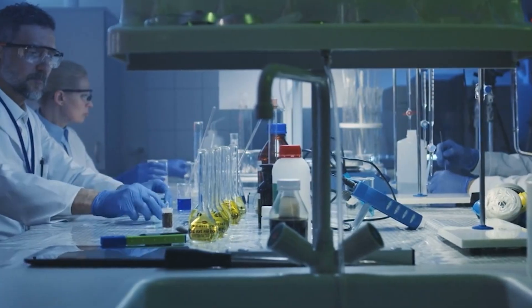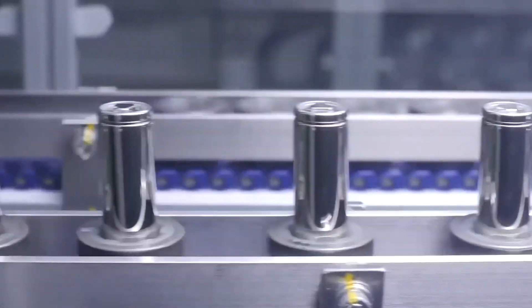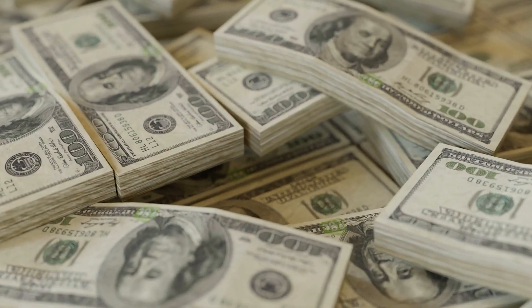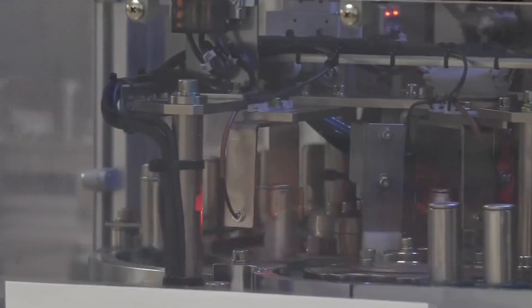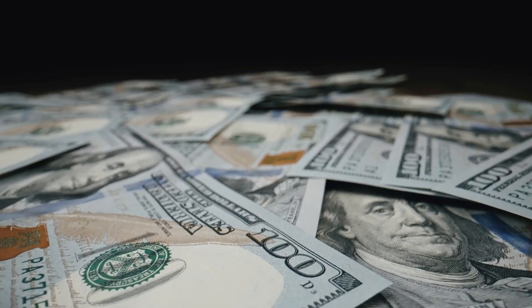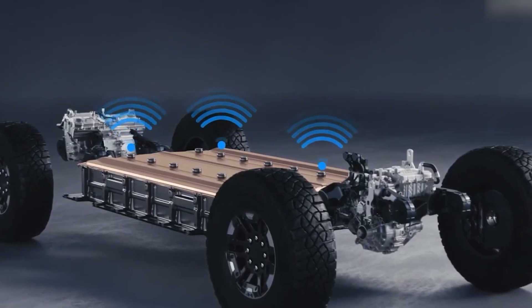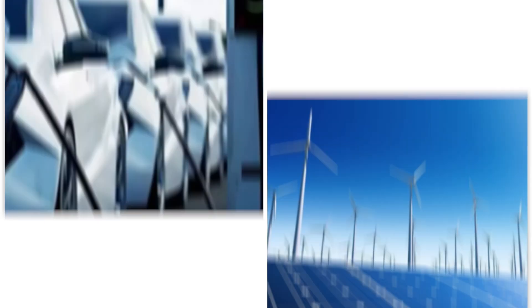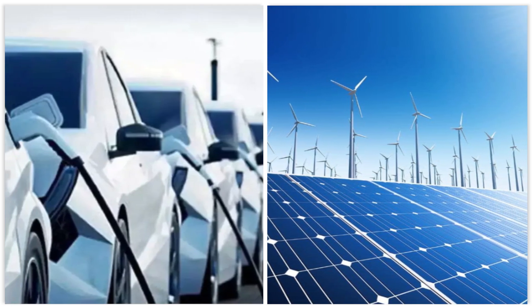To understand how significant this innovation is, consider the cost of building a gigafactory that produces 100 gigawatt-hours of batteries per year. Using traditional methods, this would cost over $5 billion. But with Samsung's roll-press assembly, that cost drops to just $3 billion, a massive 40% savings. These cost reductions could lead to cheaper batteries for consumers, making electric vehicles and renewable energy storage more accessible than ever.